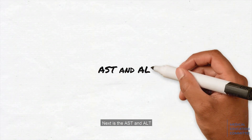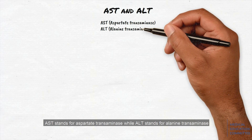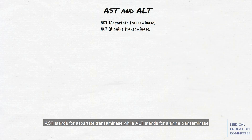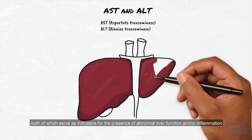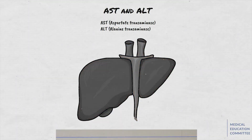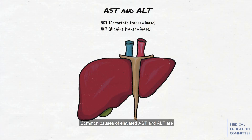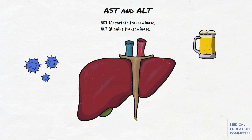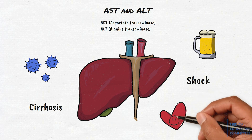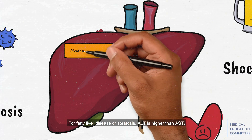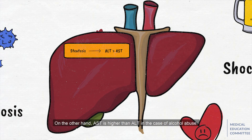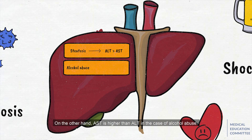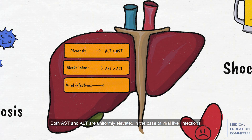Next is the AST-ALT ratio. AST stands for aspartate transaminase, while ALT stands for alanine transaminase, both of which serve as indicators for the presence of abnormal liver function and/or inflammation. The normal values are as follows. Common causes of elevated AST and ALT are viral liver infections such as hepatitis, alcohol abuse, cirrhosis, shock, and heart failure. For fatty liver disease or steatosis, ALT is higher than AST. On the other hand, AST is higher than ALT in the case of alcohol abuse. Both AST and ALT are uniformly elevated in the case of viral liver infections.